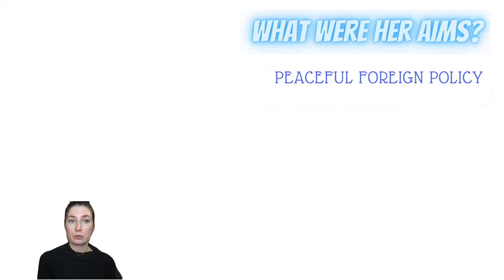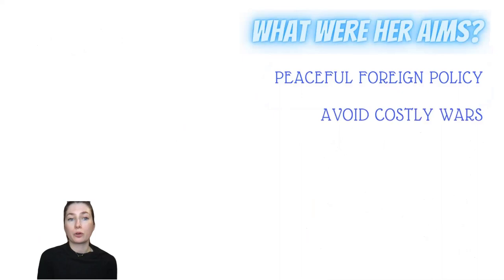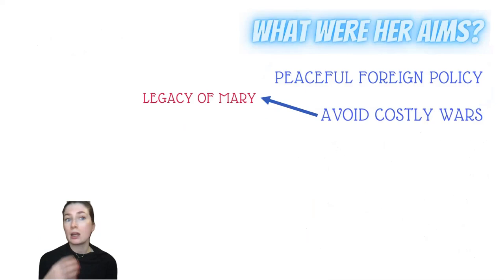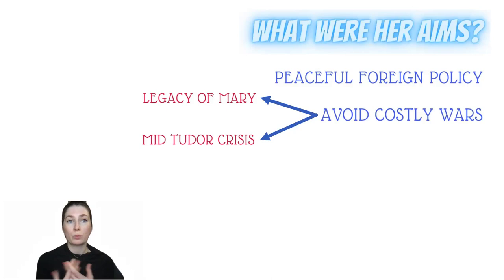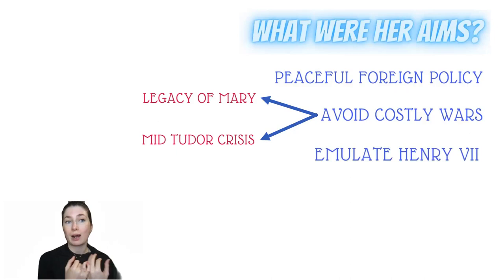So first of all, what were her aims? What did she actually want to achieve with her foreign policy? Overall, she absolutely wanted a peaceful foreign policy — she wanted to avoid costly wars. She had seen what happened under Mary with the loss of Calais, and the war she inherited at the very beginning of her reign. Equally, under her brother Edward, the financial burden of the war in Scotland led to the mid-Tudor crisis, particularly financially. She definitely wanted to avoid that, and we can say she wanted to emulate her grandfather, Henry VII.